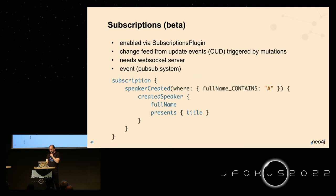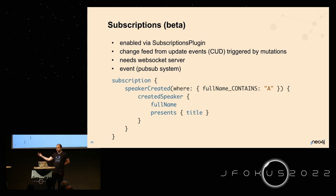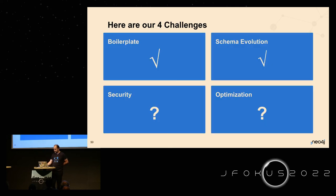Subscriptions are currently in beta — it's basically a live query where you get updates whenever the underlying data changes. Whenever something is updated through mutations, the subscription gets an endless stream of updates. For people that want to implement chats, notification streams, or similar, you can use subscriptions. This needs a WebSocket server on the server side to stream the updates.